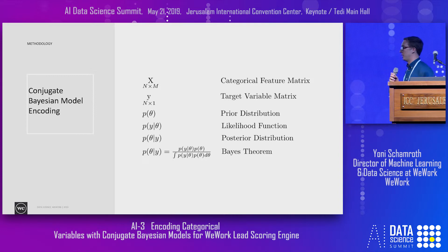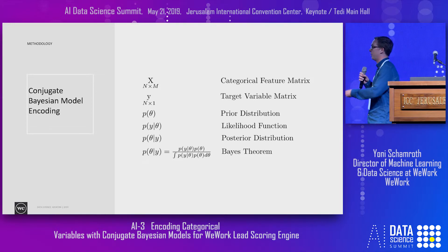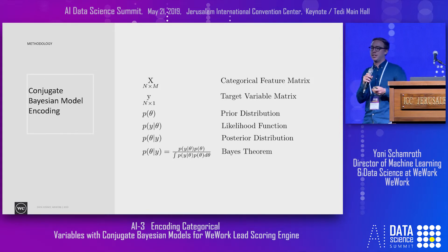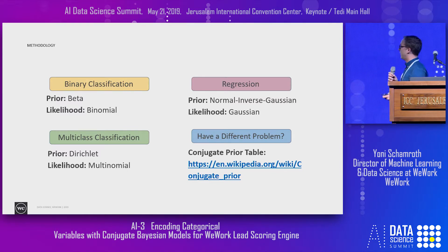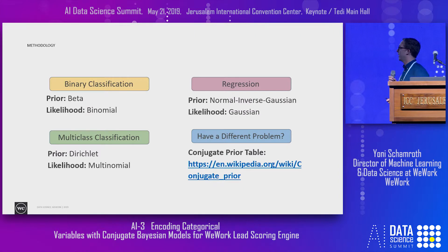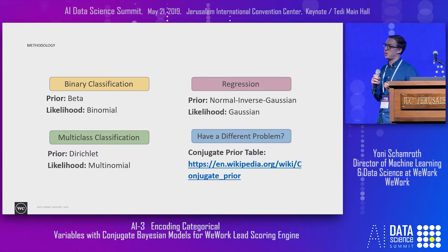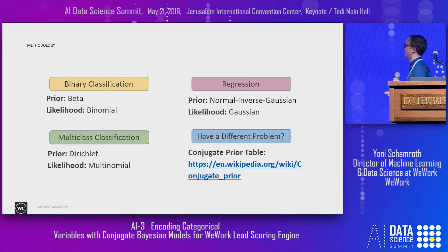Why use conjugate Bayesian models? Two reasons. First, Bayes' theorem will be analytically tractable, so we don't have to deal with messy numerical integration. Second, conjugate Bayesian models fit really nicely to very common machine learning problems: binary classification modeled by the beta-binomial, multi-class classification using a Dirichlet prior and multinomial likelihood, and regression modeled with a normal-inverse-Gaussian prior and Gaussian likelihood. If you have a different problem, look at the likelihood that fits it and find its conjugate pair.